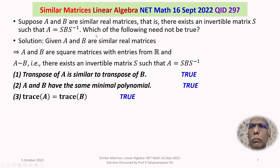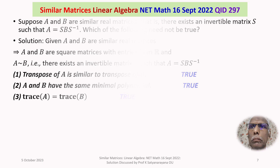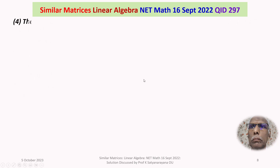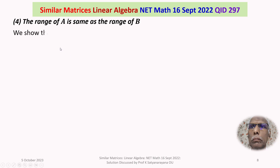We need to find which of the following need not be true. Option 4 need not be true, meaning it is not always true — sometimes it is false. So let's look at option 4: the range of A is same as the range of B. This property need not be true, so we give a counter-example.